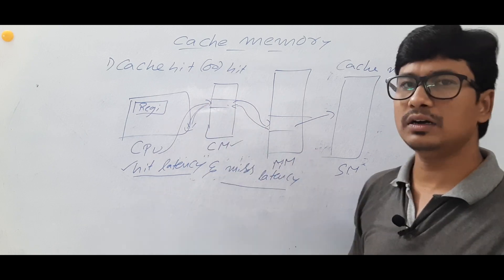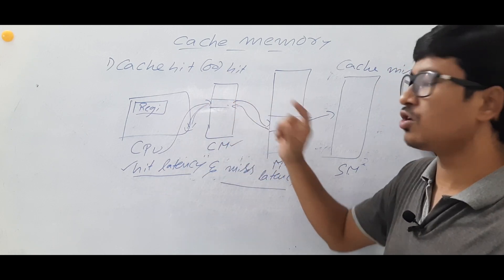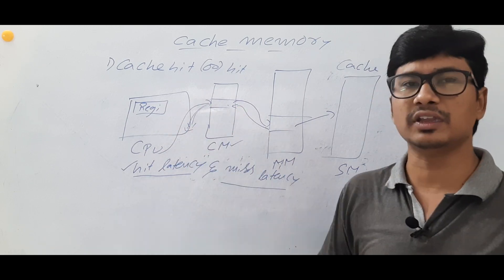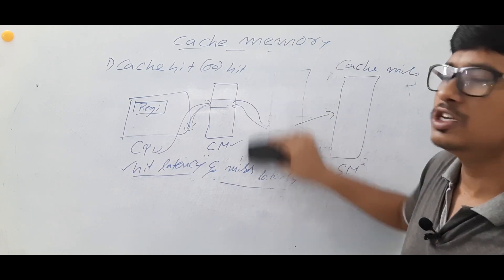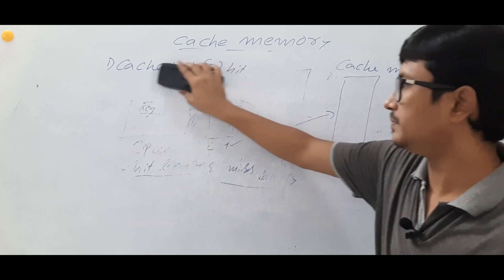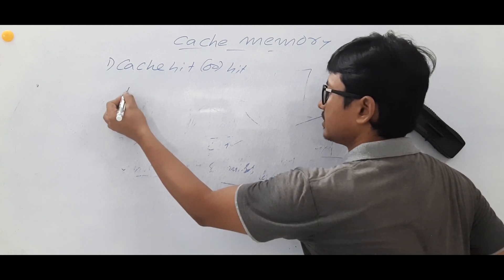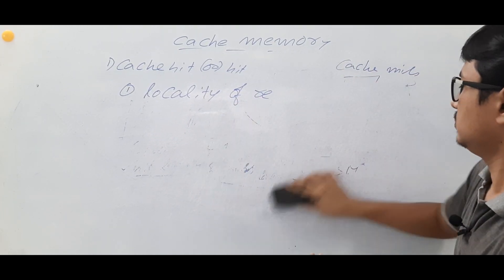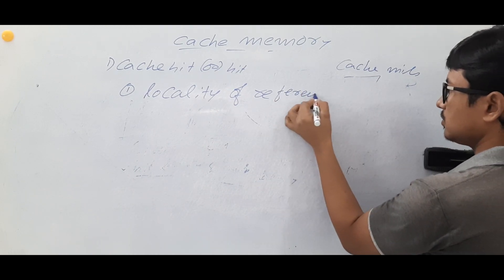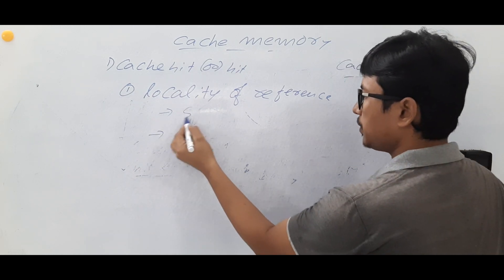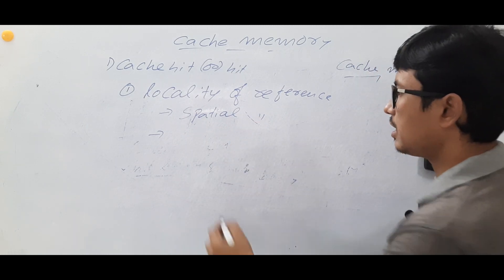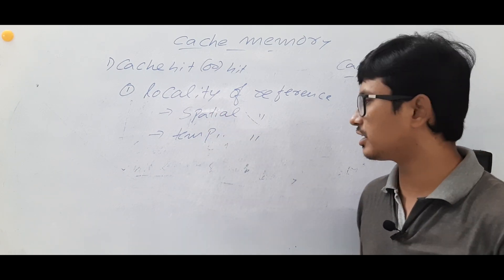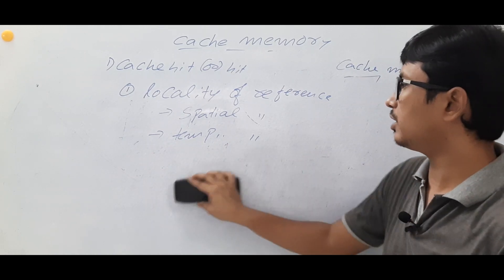People may ask: if an instruction is not in cache but is in main memory, why should we keep it in the cache memory? Why not execute it directly in the CPU? This is explained in terms of locality of reference. We have two types: spatial locality of reference and temporal locality of reference.